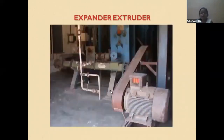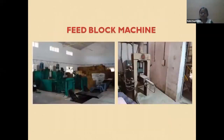The expander-extruder can process around 500 to 600 kg per hour depending on the roughage proportion. For block making, different machines with different capacities are available. A small-scale block making machine with a 7.5 HP motor can produce blocks manually, at a rate of around 200 kg per hour.